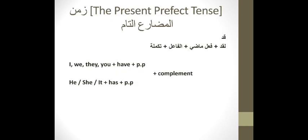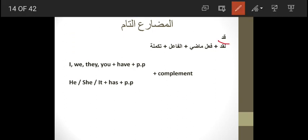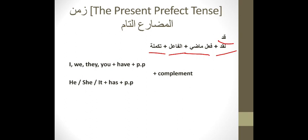Now for the present perfect tense — الزمن المضارع التام. In Arabic, if you see قد or لقد followed by a past tense verb (فعل ماضي), you already know you're dealing with the present perfect tense. قد and لقد enter on the past tense verb, and that tells you to use the present perfect in English.